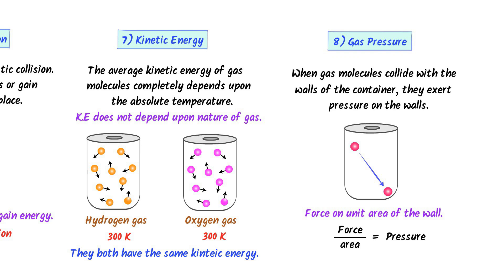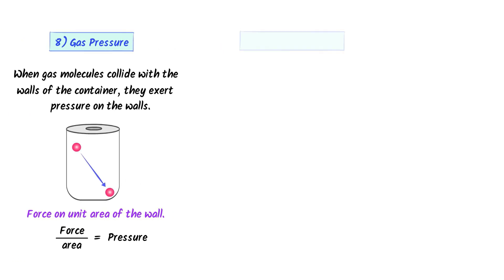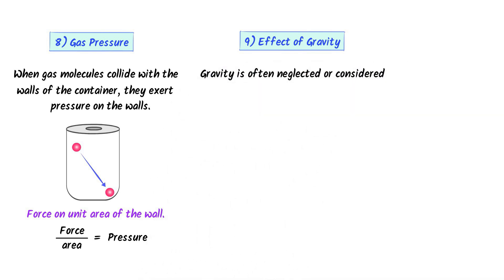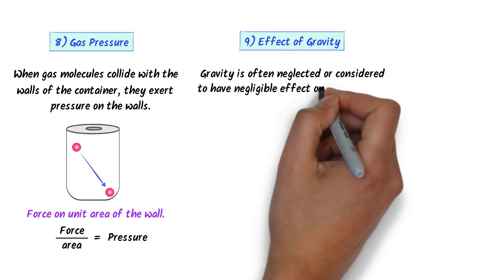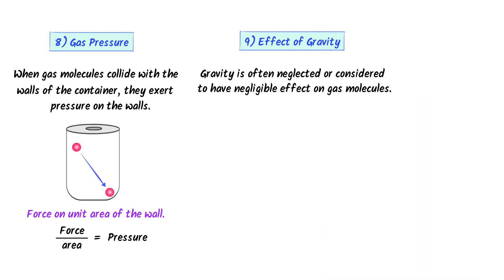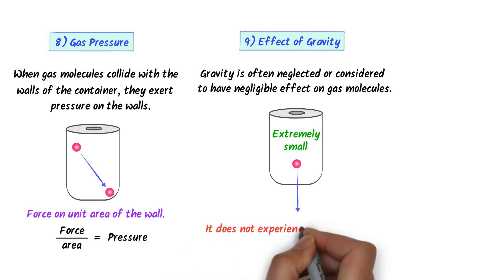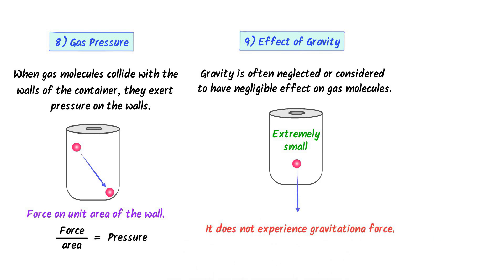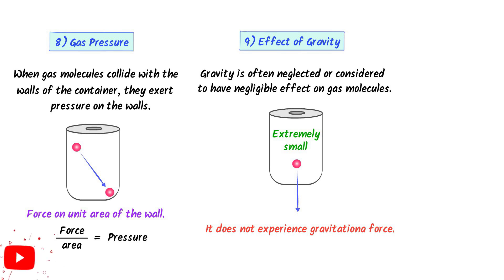The ninth postulate of the Kinetic Molecular Theory of Gases is about the effect of gravity. It states that gravity is often neglected, or considered to have a negligible effect on the molecules of a gas. Since a molecule of the gas is extremely small, it does not experience any gravitational force, so we neglect the effect of gravity on the molecules of the gas.